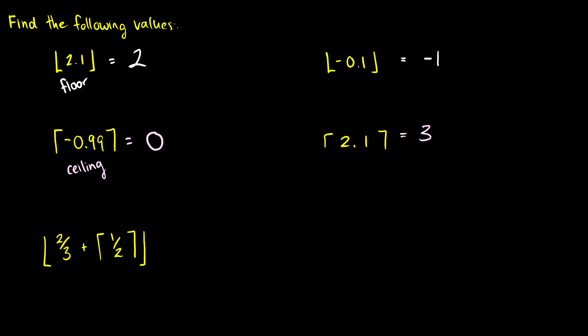So remember on a number line, if we have 0 here, negative 1 here, if we put negative 0.1 on the line it'll be about here. So we round down to negative 1. I know it seems like maybe rounding down means back to 0, but if we look on the number line and we place these down, if it's the floor we move left, if it's the ceiling we move right.